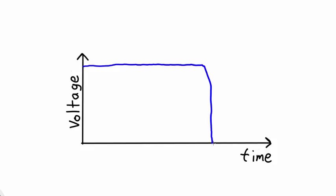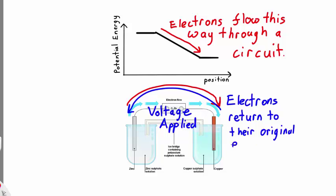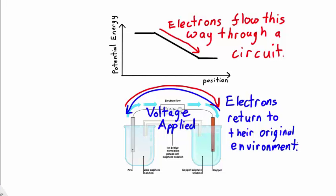However there are some batteries that can be recharged and these are called secondary cells. In a secondary cell energy in the form of an external voltage is applied and it will cause the electrons to flow in the opposite direction back to the high energy environment.